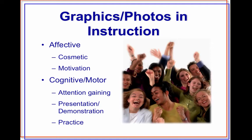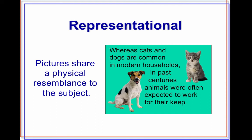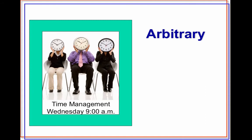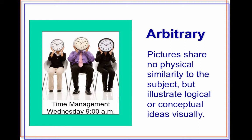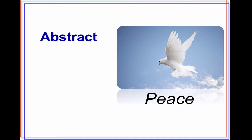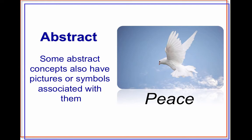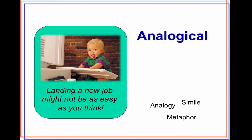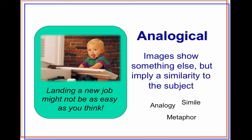Some graphics are merely representational — pictures that share a physical resemblance to the subject. We also have arbitrary graphics, which share no physical similarity to the subject but illustrate logical or conceptual ideas visually. Then we have abstract graphics, where some abstract concepts have symbols associated with them — for example, the Dove of Peace. Another type is analogical graphics, where a picture implies a similarity to the subject. Images can show analogies, similes, and metaphors.